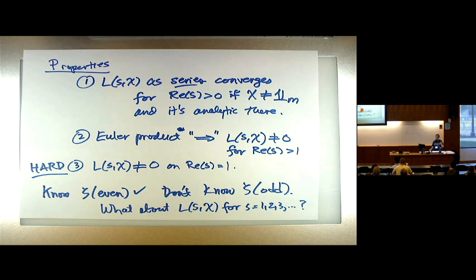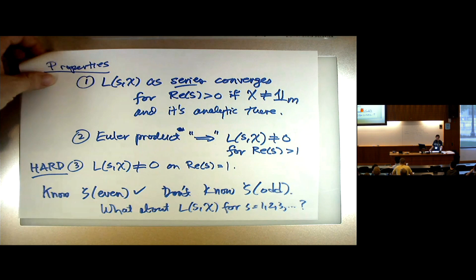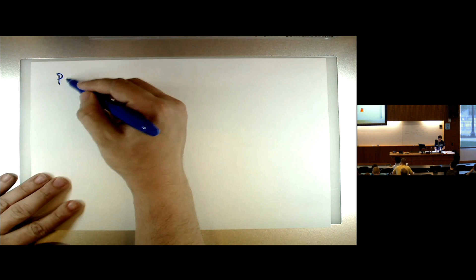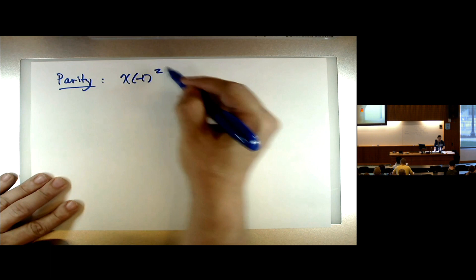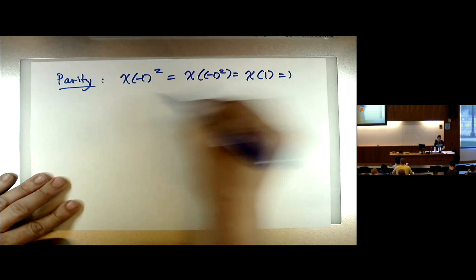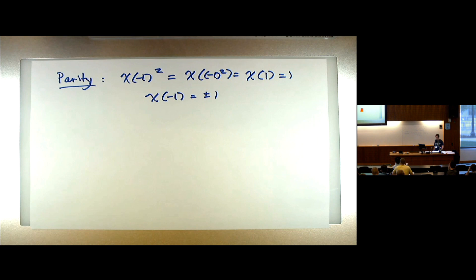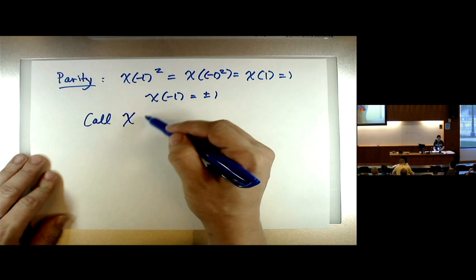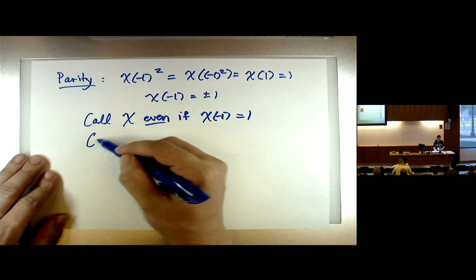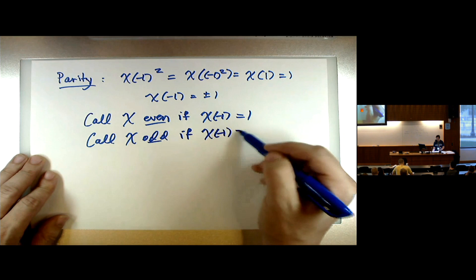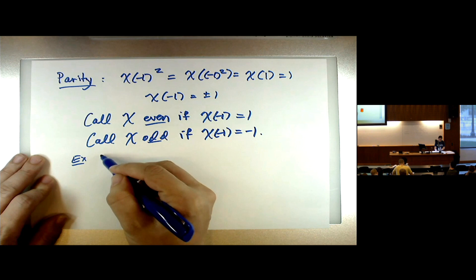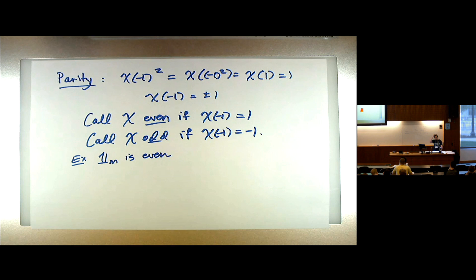To describe in which case we know values at the evens or at the odds, it comes down to what's called the parity of the character. The value of a character at −1 is going to be ±1. So we call a character even if χ(−1) = 1, and we call a character odd if χ(−1) = −1. The trivial character is always even, since it's always 1 and never takes value −1.